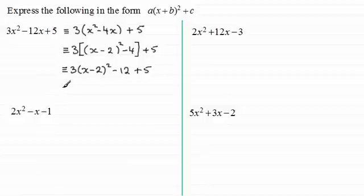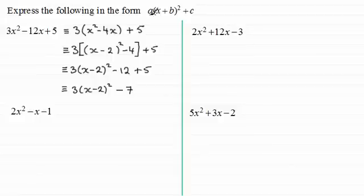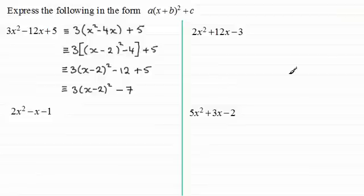And now we just group this up. We've got 3 times x minus 2 all squared, and then minus 12 plus 5 is going to be minus 7. So we've got it in the required format. If we're asked to state the values of A, B, and C: A would be 3, B would be minus 2, and C would be minus 7. You might be confident enough to have a go at this next one — it's just going to be a little harder but the principles are exactly the same. I'll give you a moment to pause the video and try.